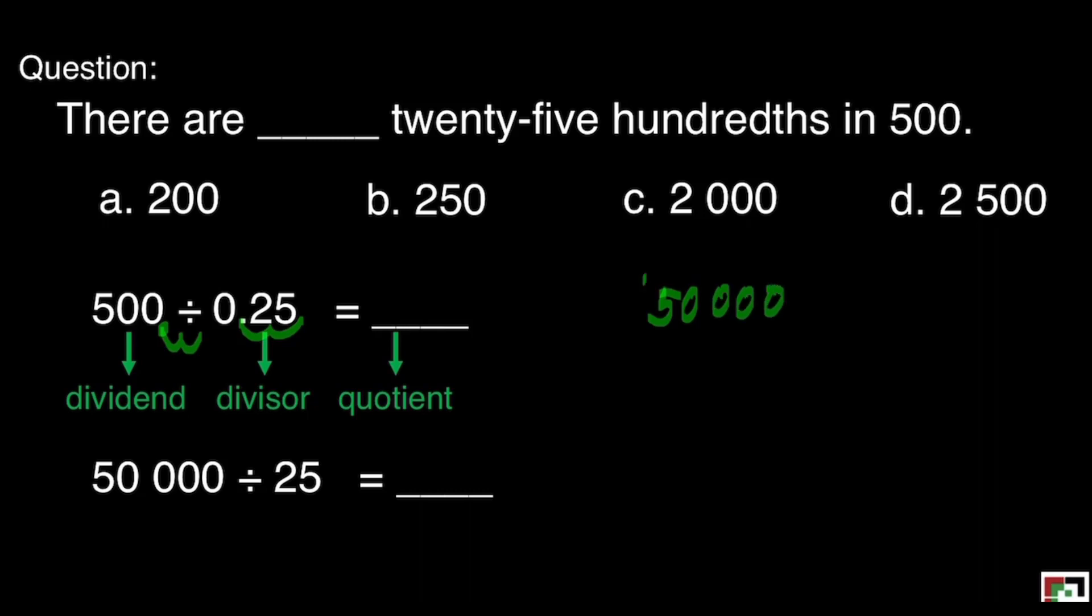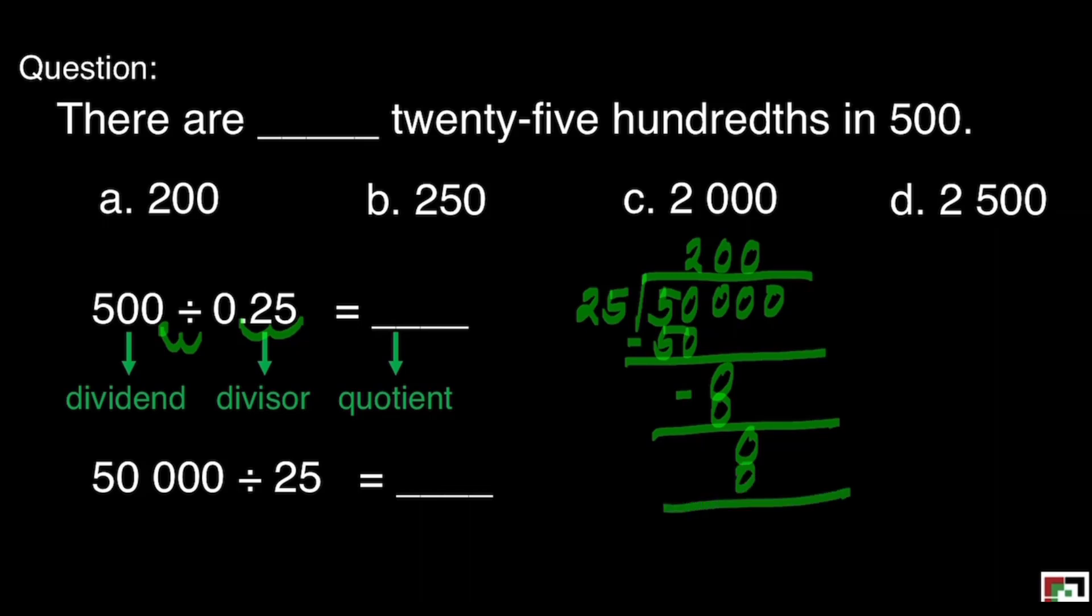We're ready to divide. That's 50,000 divided by 25. How many 25's are there in 50? That's 2. 2 times 25 is 50. Then subtract. We will bring down all the 0's. That gives us a final answer of 2,000. That would mean our answer here is letter C.